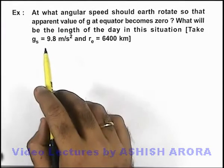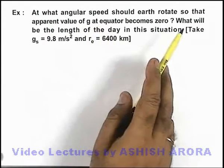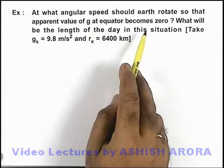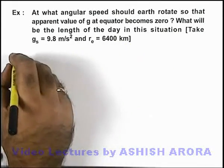In this example, we are required to find at what angular speed should Earth rotate so that apparent value of g at equator becomes zero, and it is also asking what is the length of the day in this situation. Constants are also given to us.